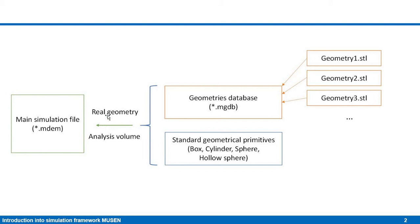Independently of the type of geometry, there also exist two different types of geometrical primitives. This can be standard geometrical primitives like box, cylinder, sphere, or hollow sphere, whose dimensions and parameters you can specify directly in the user interface. In MUSE you also have a separate file — the so-called geometries database — where geometries are stored. You can add any STL file to this geometry database and later use it in your simulation.